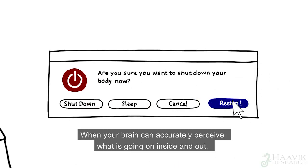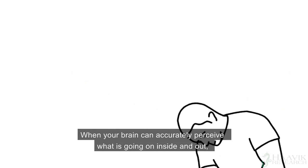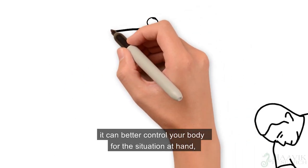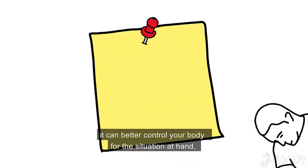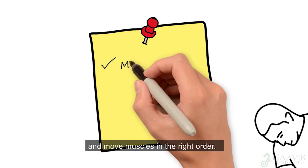When your brain can accurately perceive what's going on inside and out, it can better control your body for the situation at hand and move muscles in the right order.